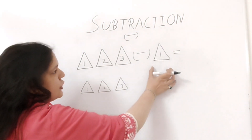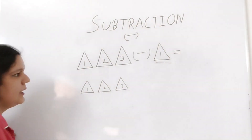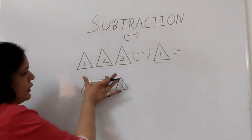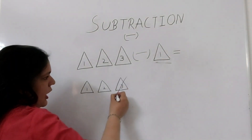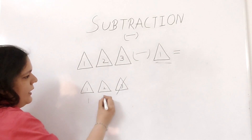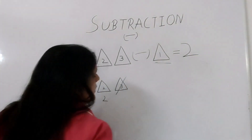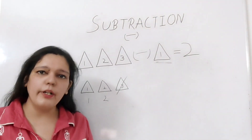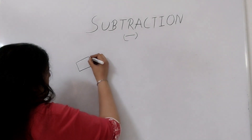So I'll cut down this one shape from the total three shapes. You can say I have three chocolates and I'll give one to someone — how many chocolates do I have left? One and two. So the answer will be two.